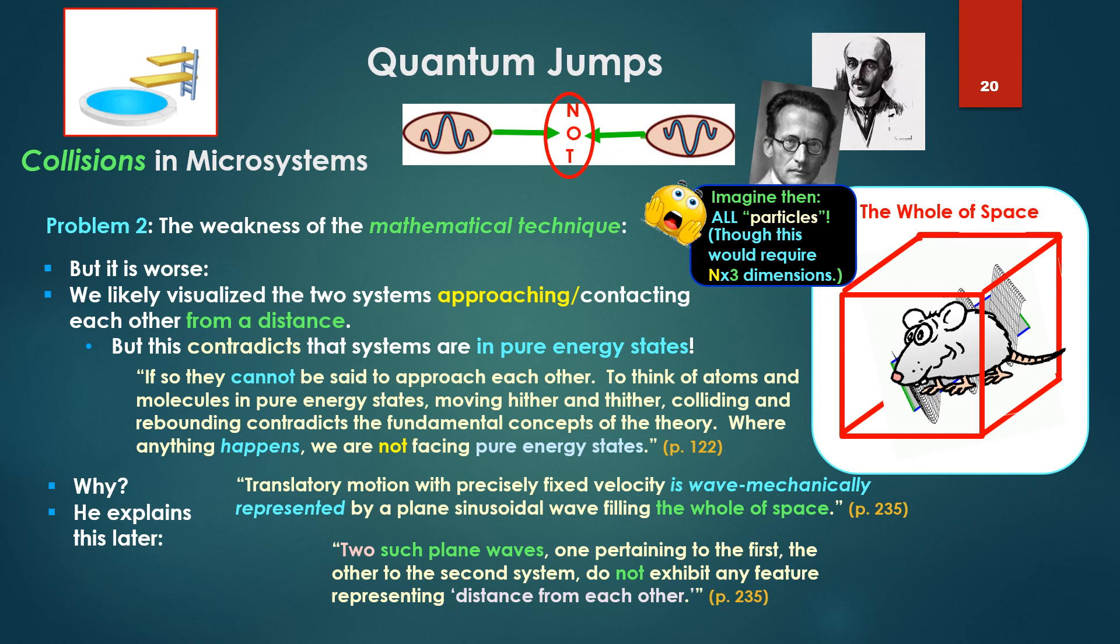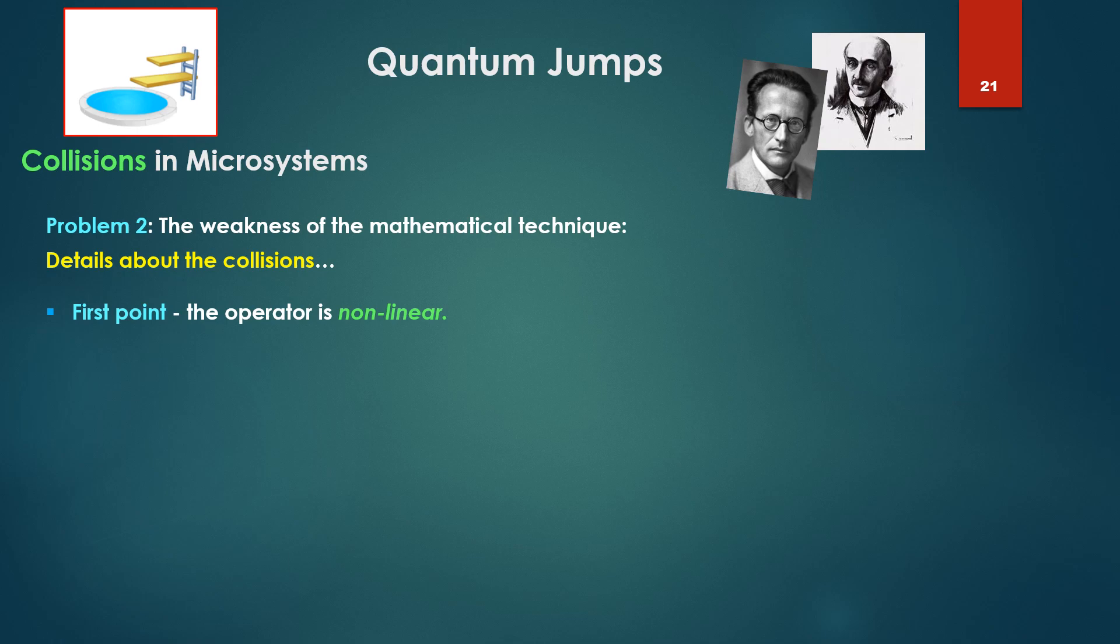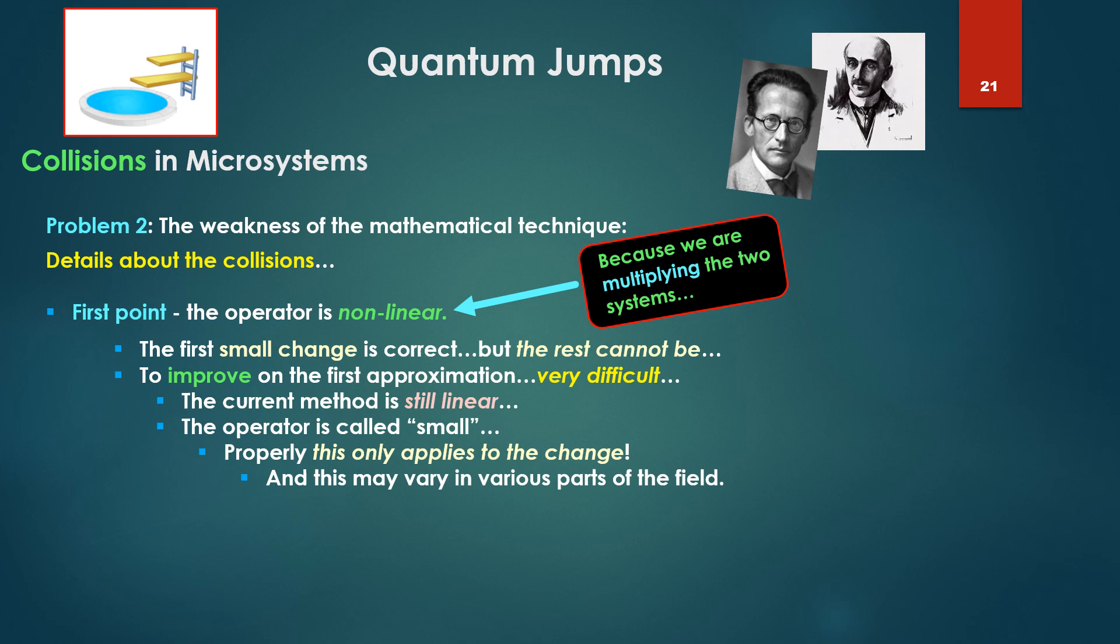Two such plane waves, one pertaining to the first, the other to the second system, do not exhibit any feature representing distance from each other. They're both in the same space. So we'll put our wave there as a plane wave. Now he looks at some details about the collisions under this general point of the weakness of the mathematical technique. The first point in these details, the operator is nonlinear because we're multiplying the two systems coming together. The first small change we get is correct, but the rest cannot be. To improve on the first approximation is very difficult. The current method is still linear.